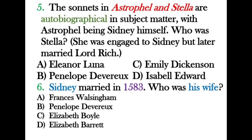The sonnets in Astrophel and Stella are autobiographical in subject matter, with Astrophel being an allegorical symbol for Sidney himself. Question five asks who Stella was. She was engaged to Sidney but later married Lord Rich. The correct answer is Penelope Devereux. Emily Dickinson was a poetess who lived long after Sidney's death, so she had no connection with him.